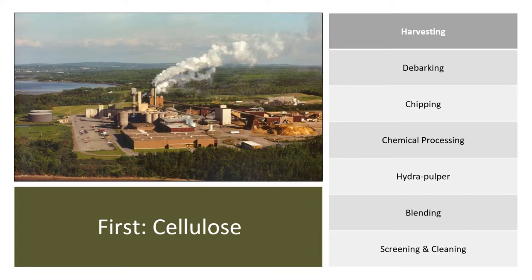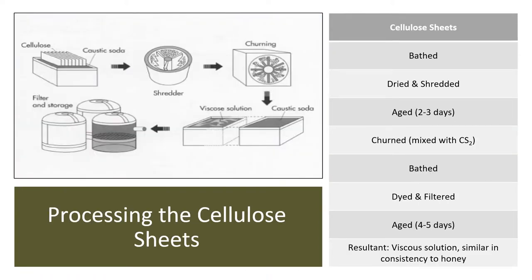Production of rayon begins with a processed cellulose, with the content in the pulp being around 87 to 95 percent. The cellulose sheets are processed by first being soaked in sodium hydroxide, also known as caustic soda, to create alkali cellulose, which is then dried, shredded, and aged for 2–3 days.